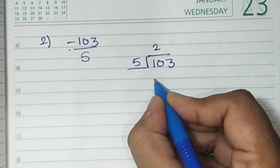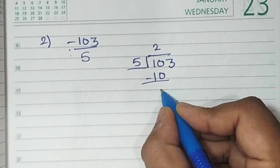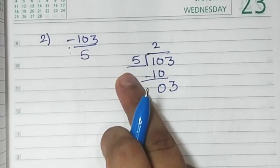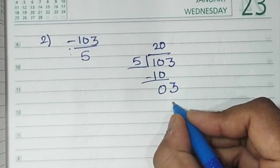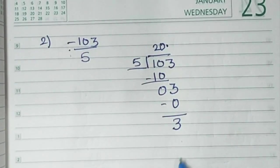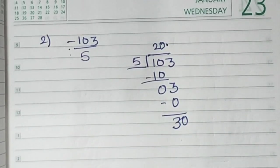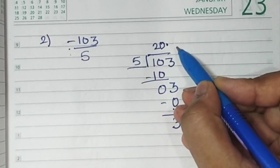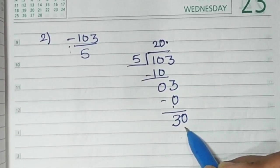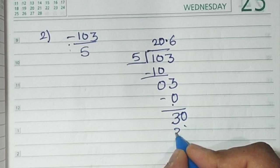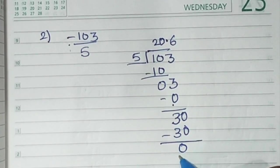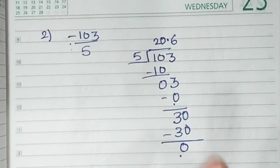5 into 103. 5 twos are 10, 0. 3 comes down. 3 is smaller than 5. 5 zeros are 0. You have 3. Then you can take a decimal point here. Now, you can add a 0. We had to take 5 zeros as 0. Then we can put a decimal point. Now, we can take an extra 0 here. 5 sixes is 30. Over. Now when it's 0, there's nothing left. The remainder is 0. The answer gets over here.